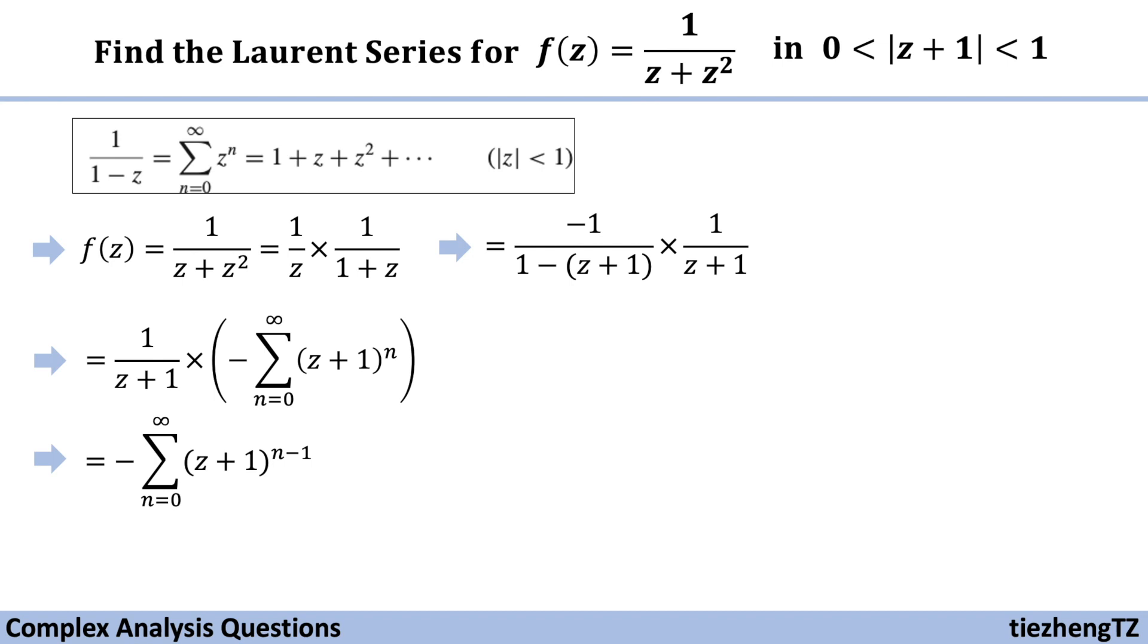And of course we can assume m equals n minus 1, so n becomes m plus 1. And then we substitute m into that function, which becomes minus sum, m starts from minus 1 to infinite, (z plus 1) to the power of m.